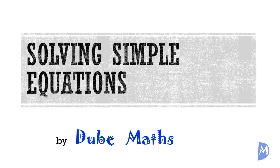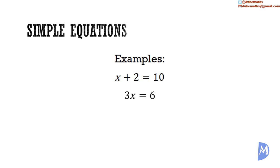Examples include: x plus 2 is equal to 10, 3x is equal to 6, 7x plus 3 is equal to 5x plus 17, and 5x over 3 is equal to 2x plus 5 over 2.